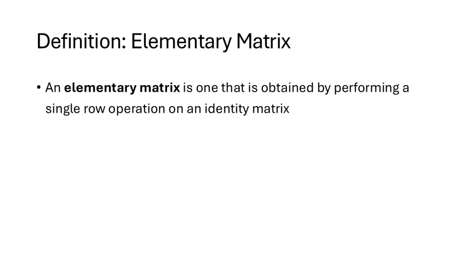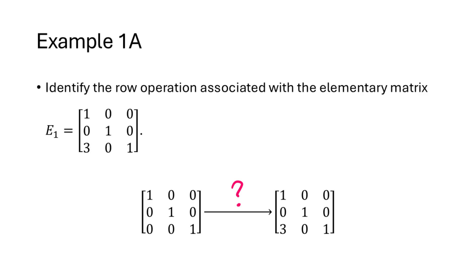In this lecture we're going to be talking a lot about elementary matrices. An elementary matrix is the result of taking one of those three row operations and applying it to the n by n identity matrix. For example, this matrix E1 is an elementary matrix. Can we identify which row operation we did starting with the 3 by 3 identity matrix that resulted in this matrix E1?